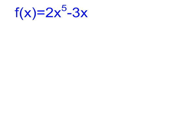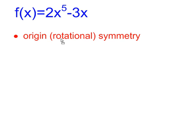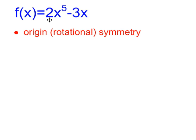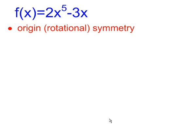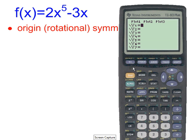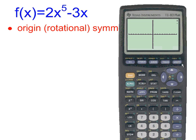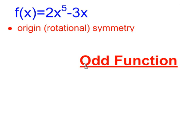So if we try that method — looking for rotational symmetry around the origin — with the graph of f(x) = 2x⁵ - 3x, then in my graphing calculator, in y equals, I'll type in that function: 2x raised to the 5th power minus 3x. I can see that it passes through the origin, and if I were to flip this graph upside down and rotate it 180 degrees, I would get back the same thing I started with. So this is an odd function.